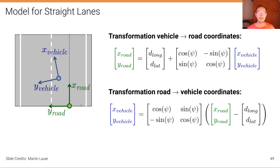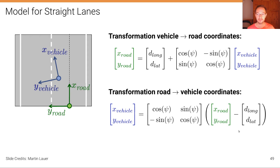Similarly, we can go the opposite direction: we subtract that vector and multiply by the inverse of that rotation matrix. This allows us to take a point in the road coordinate system and map it into the vehicle coordinate system, as shown by the equation at the bottom.